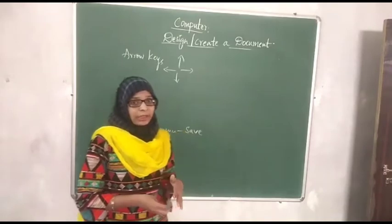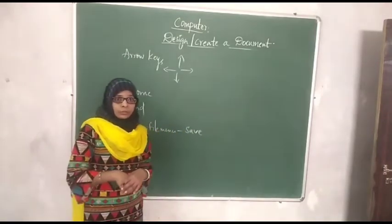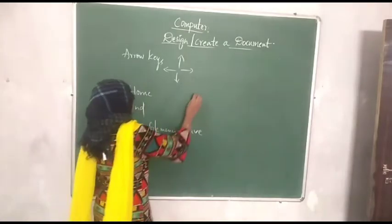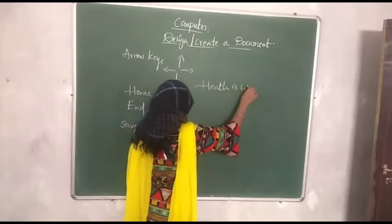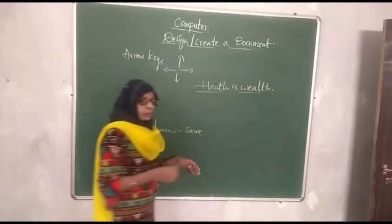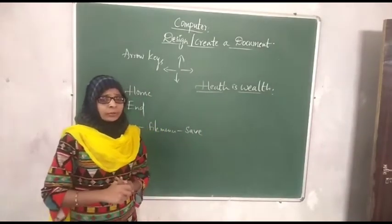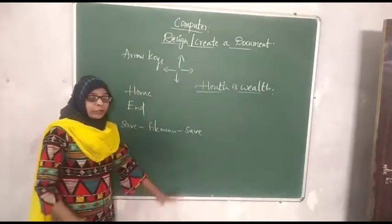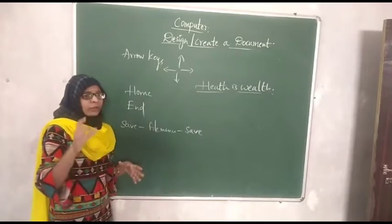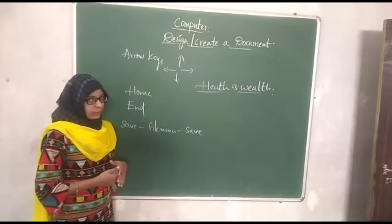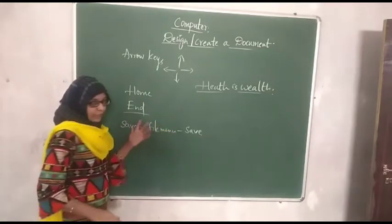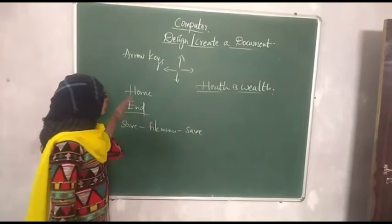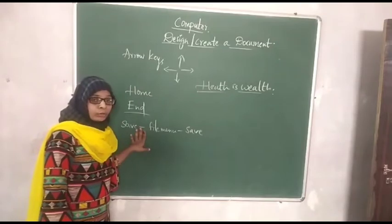Suppose you want to create a new document — you have created a small story, typed it out with paragraphs, and you are working on the document. Your story may be two to three pages or four pages long. How do you navigate it? You can go to the end of the line, move to the beginning or end, save the document, format it, and make your document colorful.